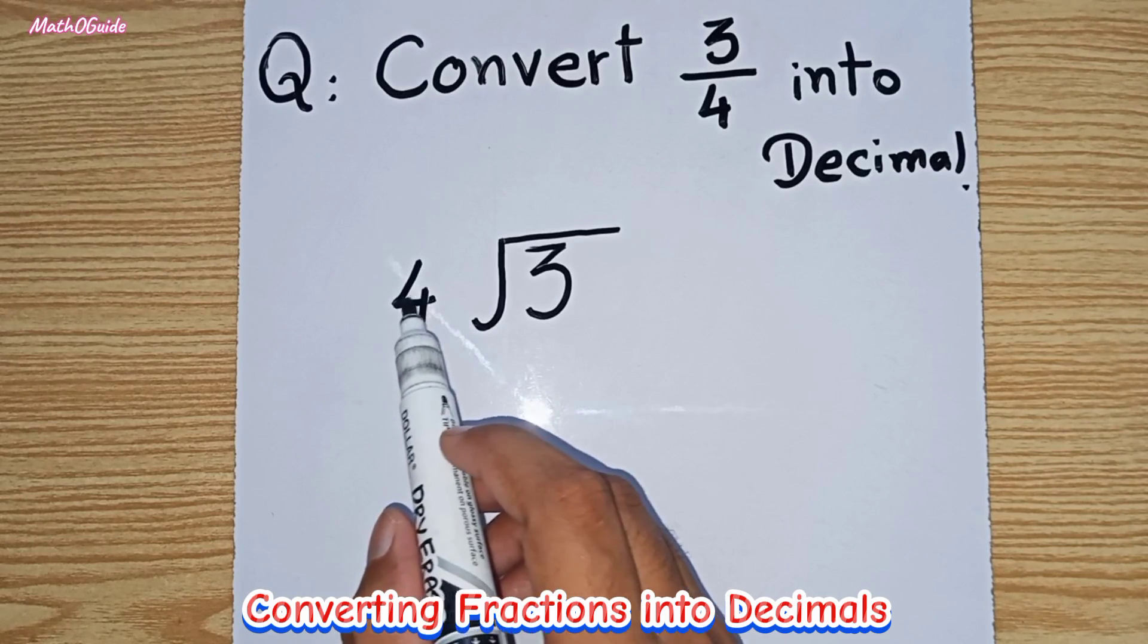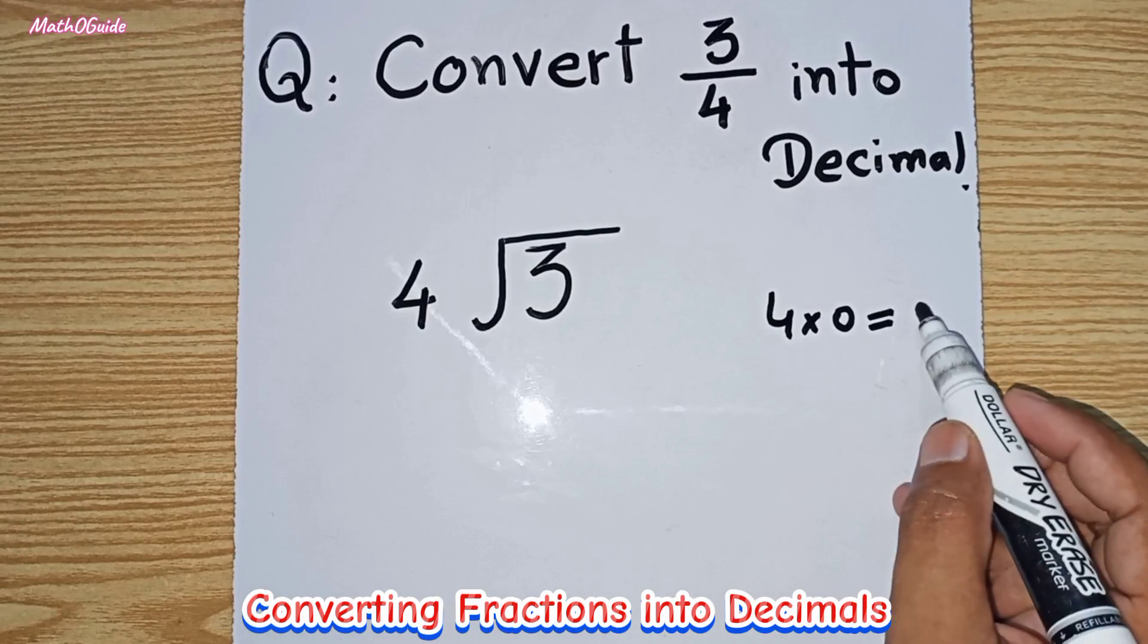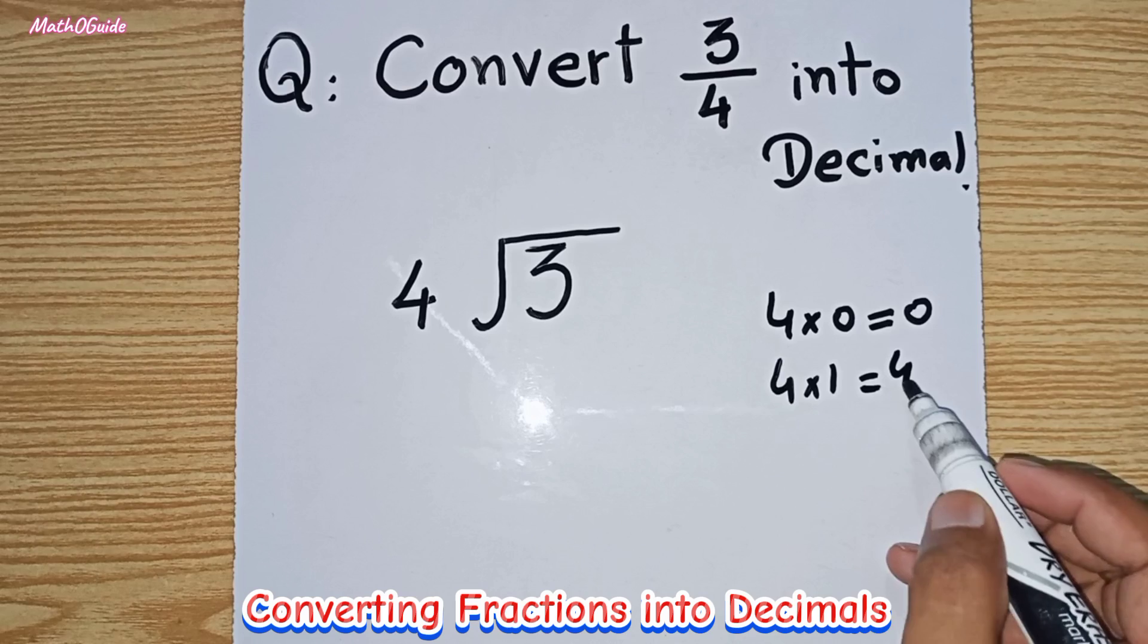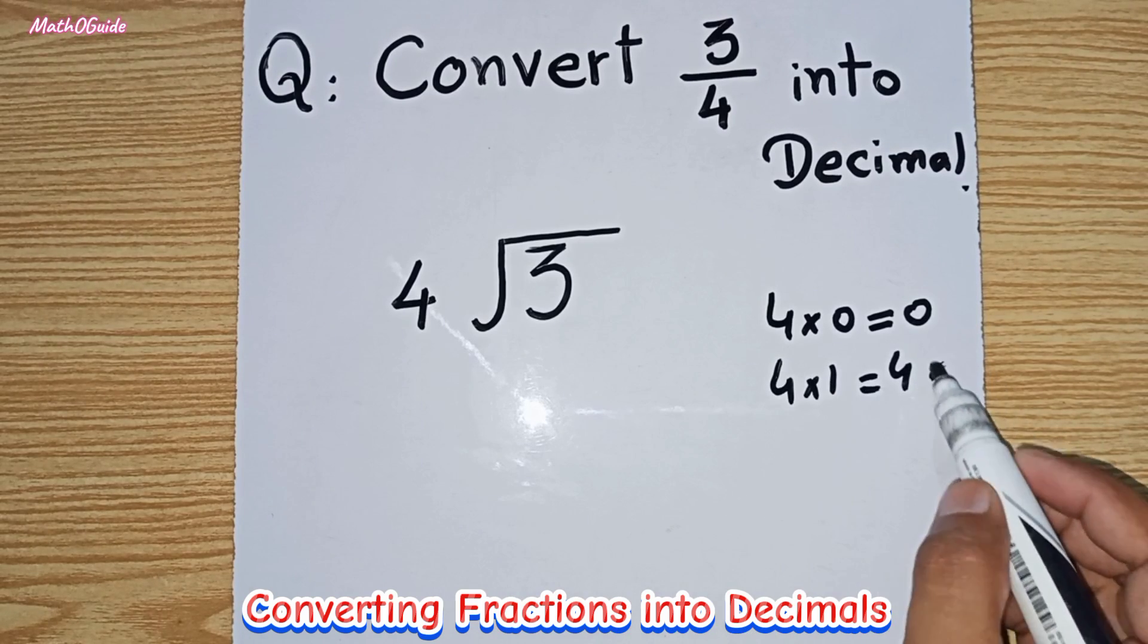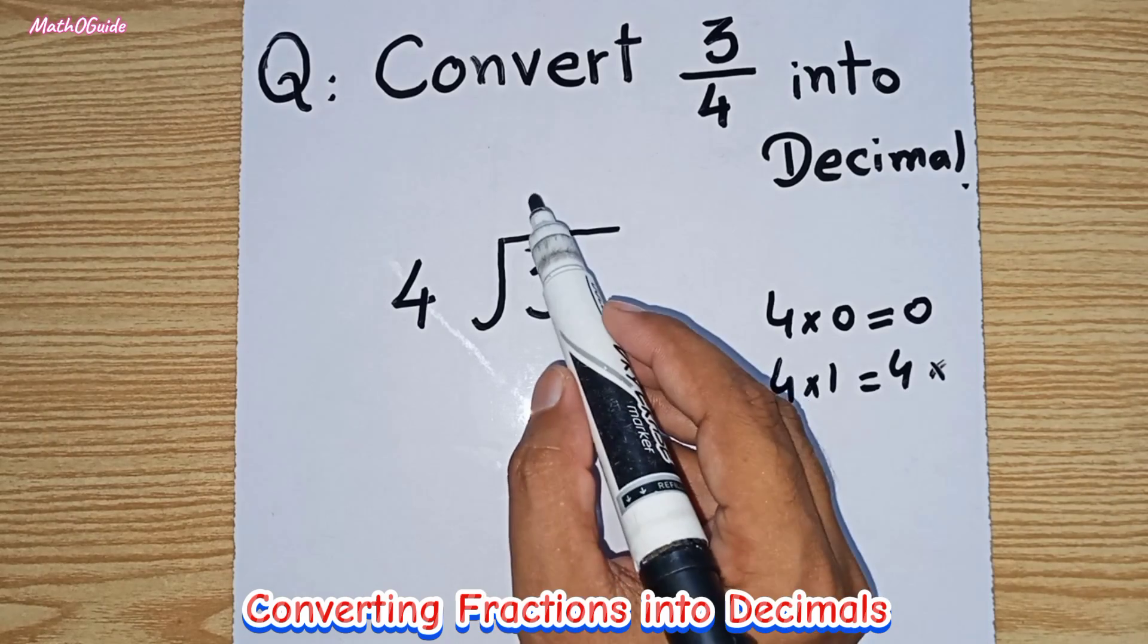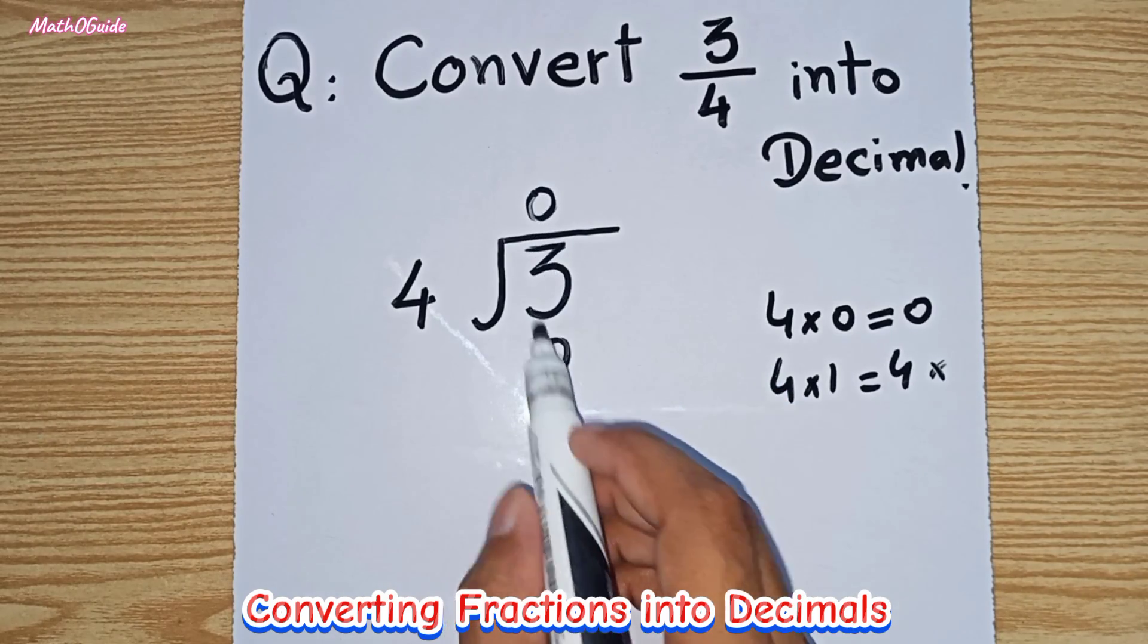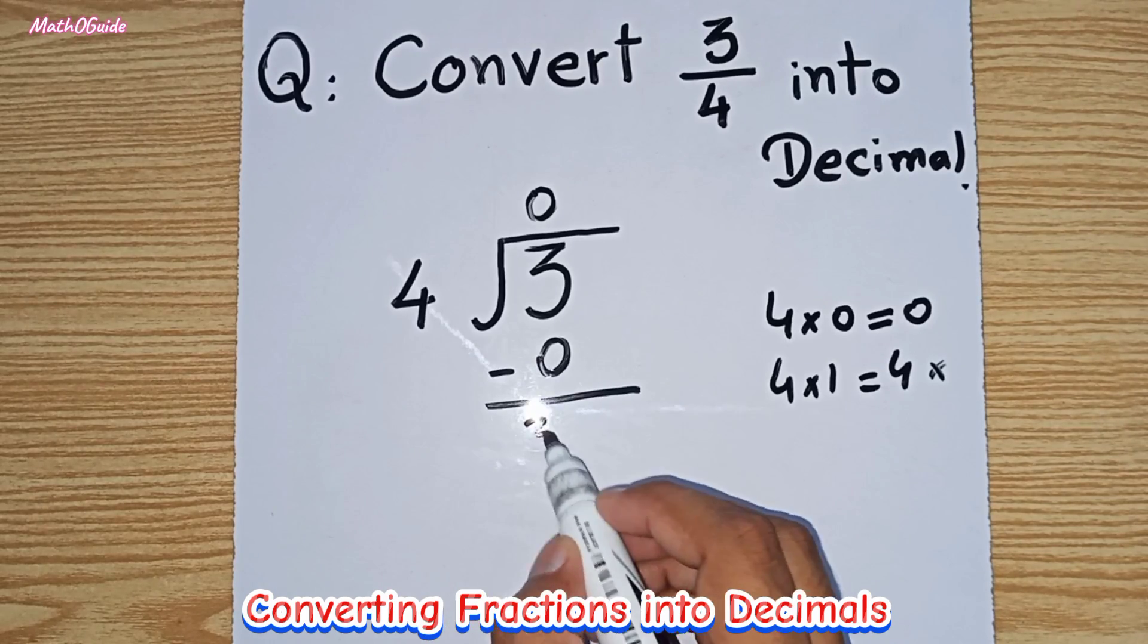As you know, we have to multiply 4 with a number to make 3. 4 times 0 is 0 and 4 times 1 is 4, so 4 is greater than 3 so we cannot apply this factor. We can use 4 times 0 is 0, so we can write 0 in quotient. You can write the product below 3 and then subtract. 3 minus 0 is 3.